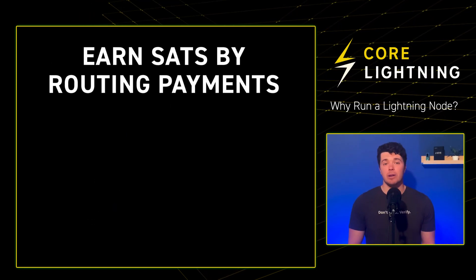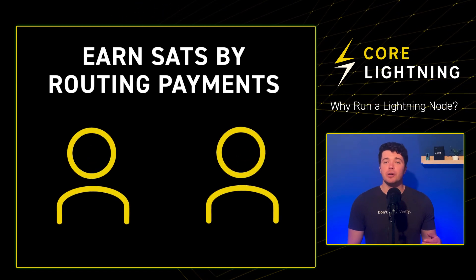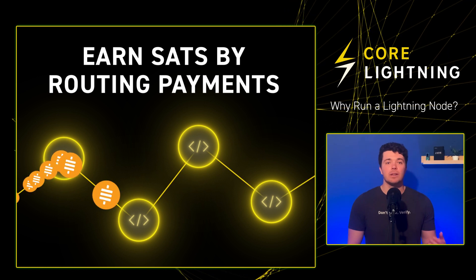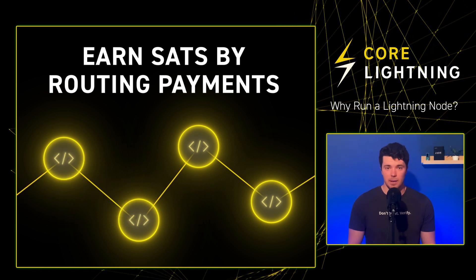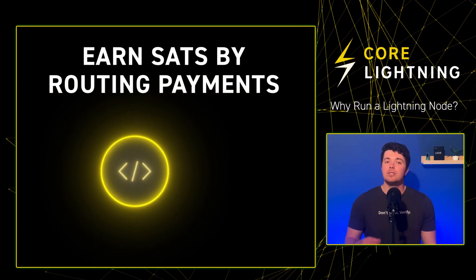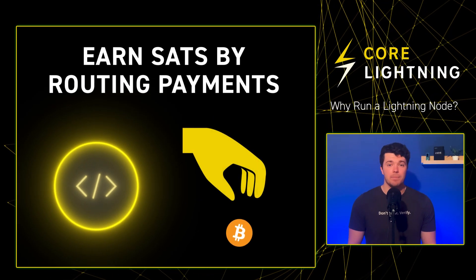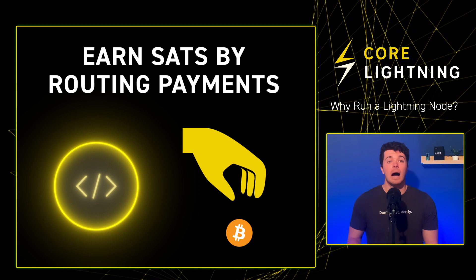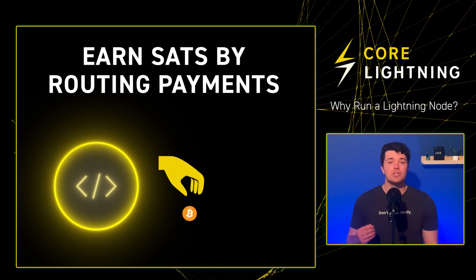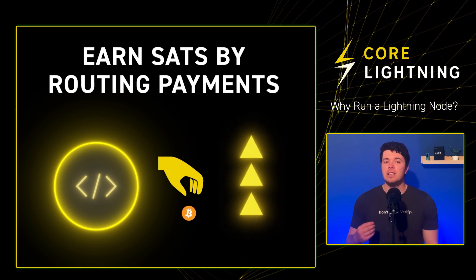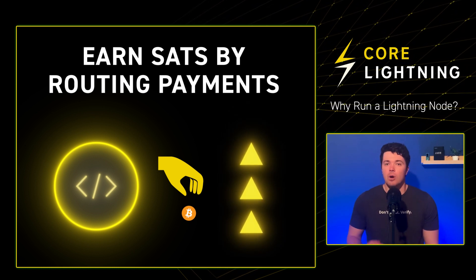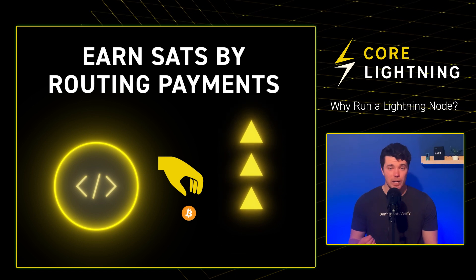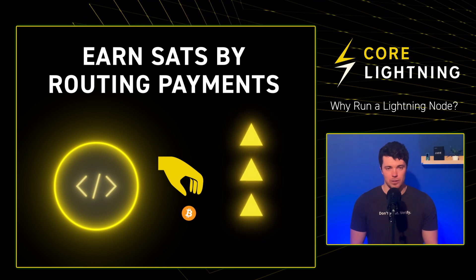Second: earn sats by routing payments. If you are not directly connected to a peer, the Lightning Network routes the payment to deliver sats to the designated recipient. When routing your payment, some node operators will charge a fee. By setting up a routing node, you can also charge a fee. However, keep in mind that if you set your fee too high, there's a good chance that no one will route through your node. Routing fees are highly competitive, so don't expect a get-rich-quick scheme — it's all market forces at play.